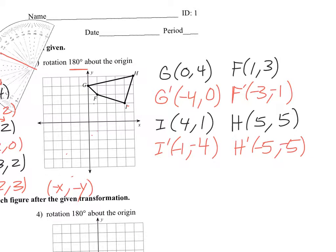So let's plot our new points. G prime was at negative 4, 0. There's G prime. F prime is negative 3, negative 1. F prime. I prime at negative 1, negative 4. And then H prime at negative 5, negative 5. There's H prime. Connect all that. So that's what that shape would look like if you rotated it over. It's a little more complex, but hopefully we're kind of following it.